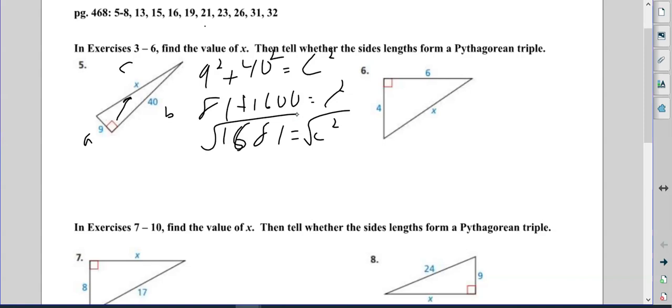I square root both sides, and the square root of 1681 is 41. So since that ends up being a whole number, then yes, it is a 9-40-41 Pythagorean triple.